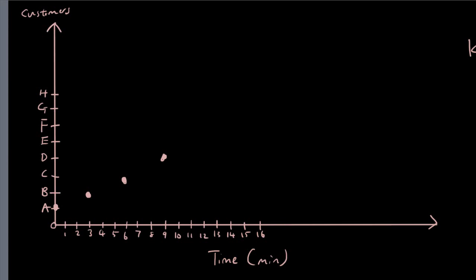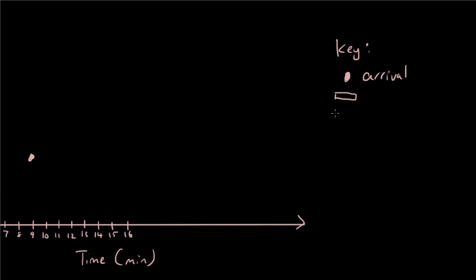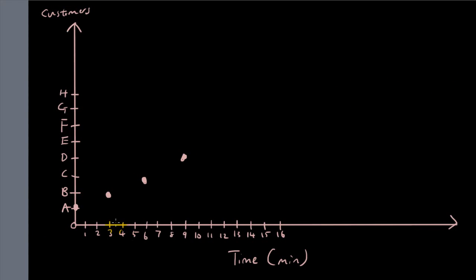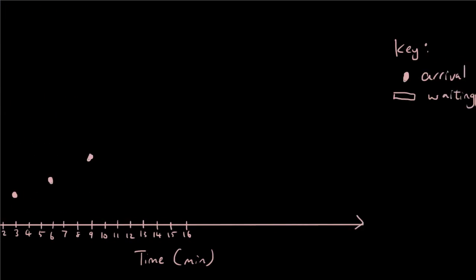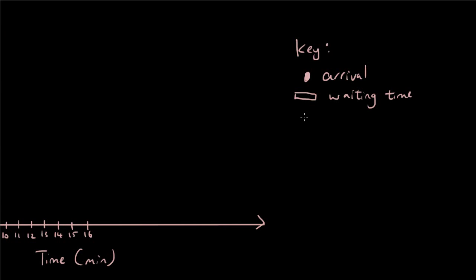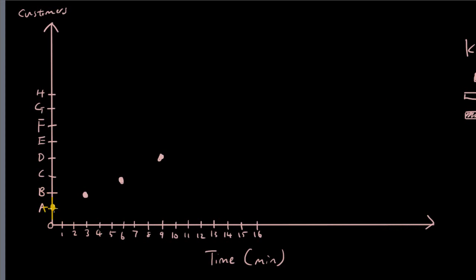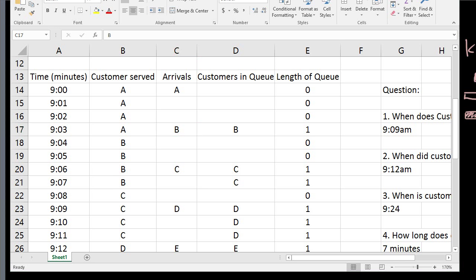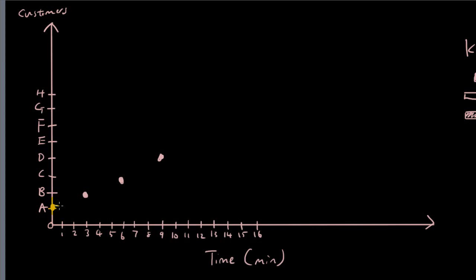Then what I want to do is just put an empty rectangle to represent waiting time, the time they spend waiting until they're served. Customer A doesn't wait at all, so let's just skip waiting time. And then I want a solid rectangle for service time. When A arrives, there's no one else in the queue, so they're being served straight away. And what do we say about how long it takes? Four minutes. So we go one, two, three, four. We're going to serve for four minutes. And they're gone.